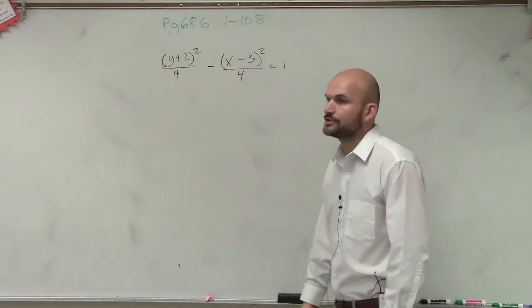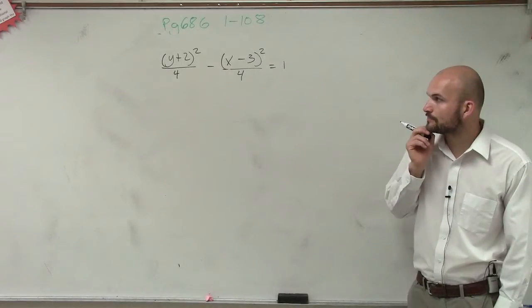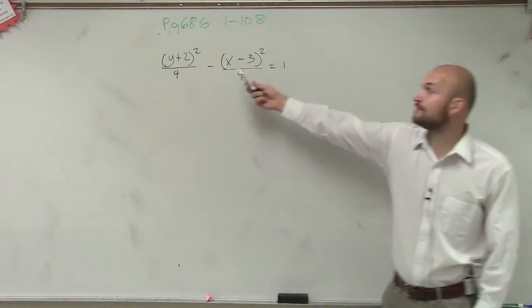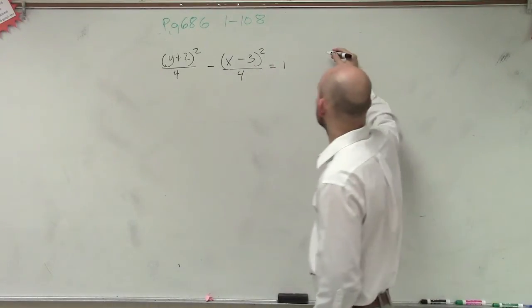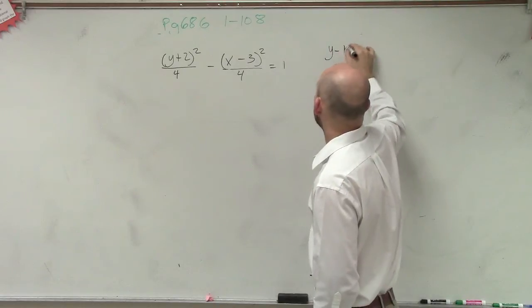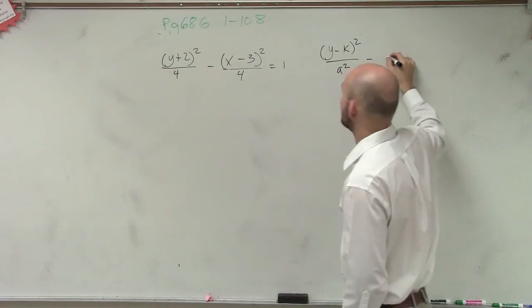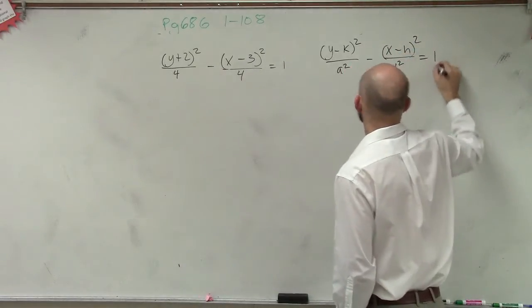So what we're going to do in this case is we need to make sure that we determine what information we have. Now remember, since we have y minus x, we know we're going to have a vertical transverse axis. So we're going to be using the equation of y minus k squared over a squared minus x minus h squared over b squared equals 1.